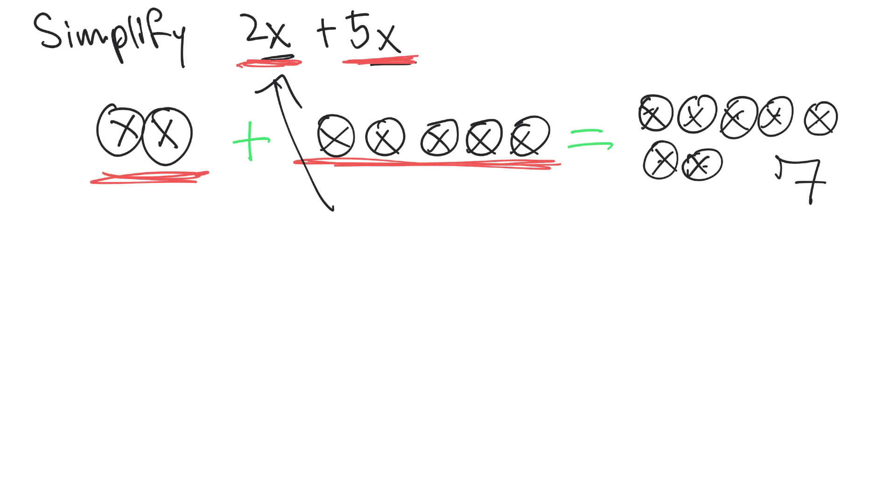2x's is 2x, and 5x is 5x. We can represent 7x's as 7x. So that is our final answer. Thank you.